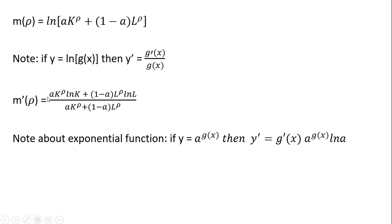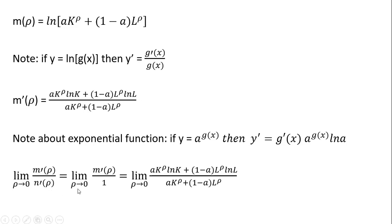The derivative of rho is one, so that simplifies easily. Rewriting the function and then taking the natural log of k, and doing a similar thing with the other term. Putting this together, we take these two derivative results and divide one by the other. Since the derivative of n(rho) is one, we plug in the derivative of m(rho) and get the following result.